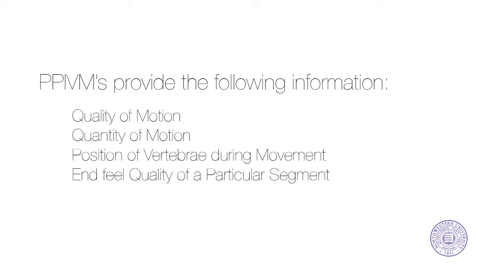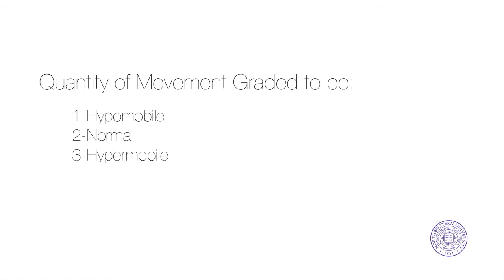In addition, the pain-resistance sequence during PIVM testing may indicate the condition is either acute or chronic. The quantity of movement at a particular segment is graded either 1, hypomobile; 2, normal; or 3, hypermobile.